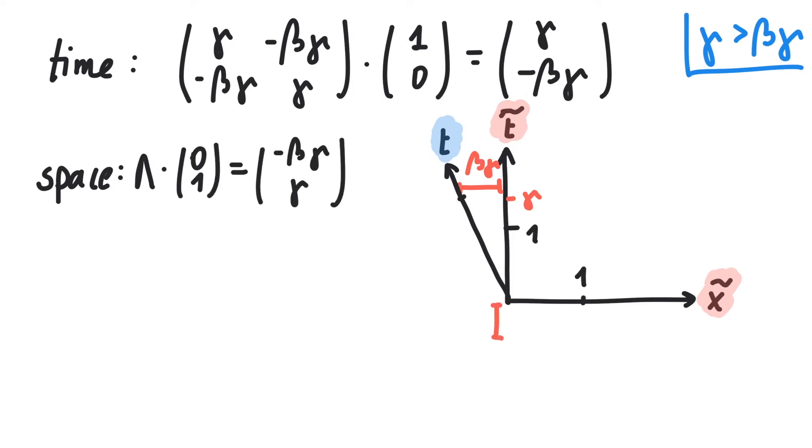0,1 becomes beta gamma down and gamma to the right. It's also rotated, but in the opposite direction, which is exactly how a Minkowski diagram for a motion to the left should look like.